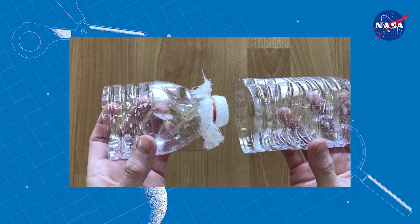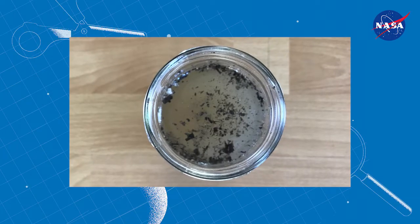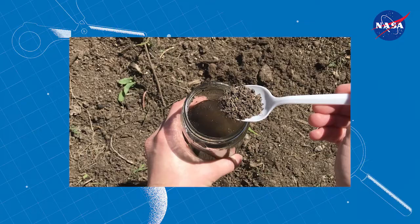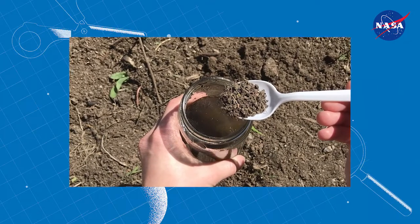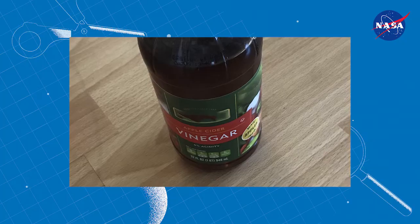And just what will you be filtering? Well, that's up to you. You could start by taking some soil from outside and mixing that with water, or if you're looking for a little bit more of a challenge, try adding vinegar or food coloring to see if that can be separated as well.